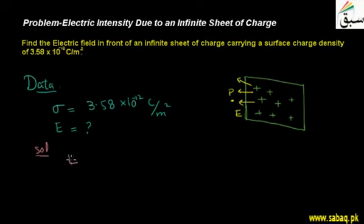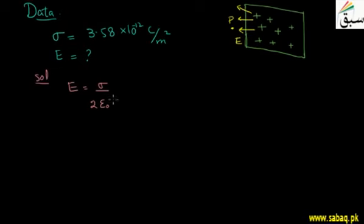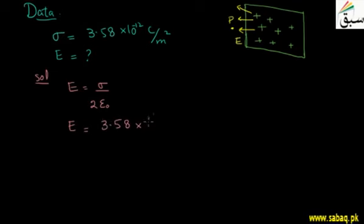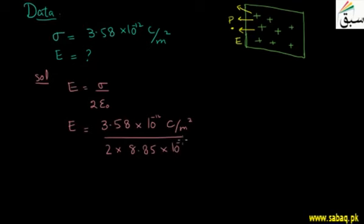The formula for electric field due to an infinite sheet is: E = surface charge density divided by 2 multiplied by epsilon naught (ε₀), where ε₀ is the permittivity of free space — a constant that tells us how the electric field of a charge is effective in free space. Substituting: σ = 3.58 × 10⁻¹² C/m², divided by 2 multiplied by ε₀ = 8.85 × 10⁻¹² C² per newton meter squared.